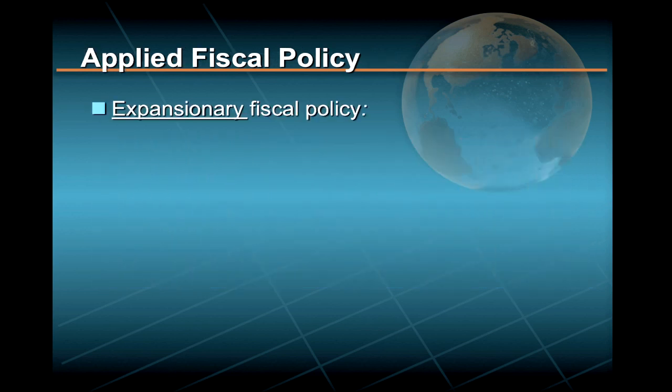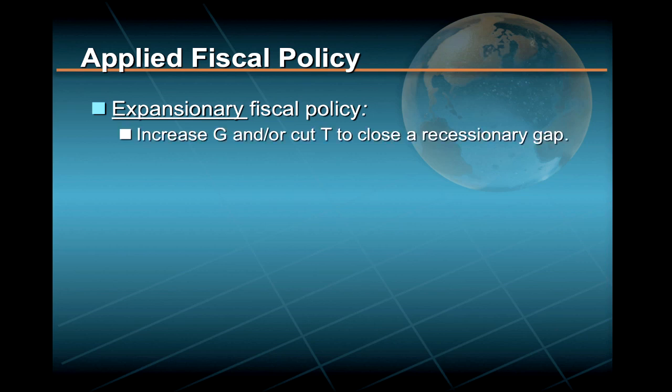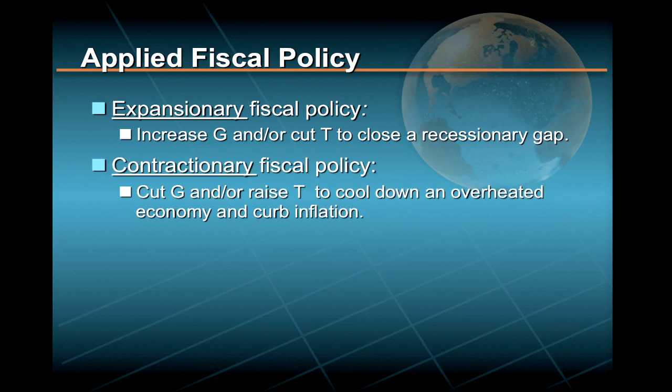Specifically, expansionary fiscal policy involves increased government expenditures, tax cuts, or some combination of the two to stimulate a recessionary economy and close a recessionary gap. In contrast, contractionary fiscal policy involves reduced government expenditures, tax hikes, or some combination of the two to cool down an overheated economy.